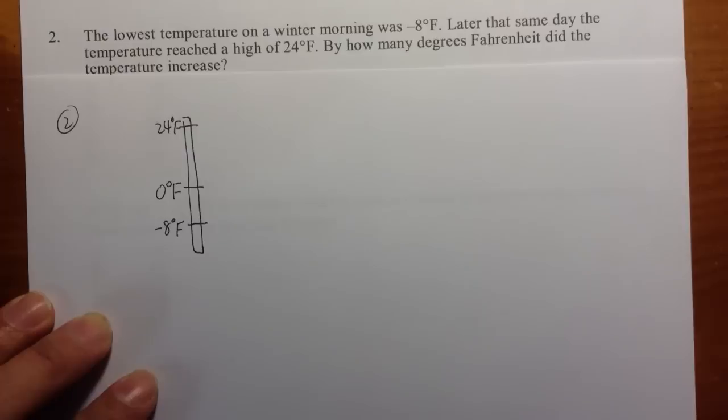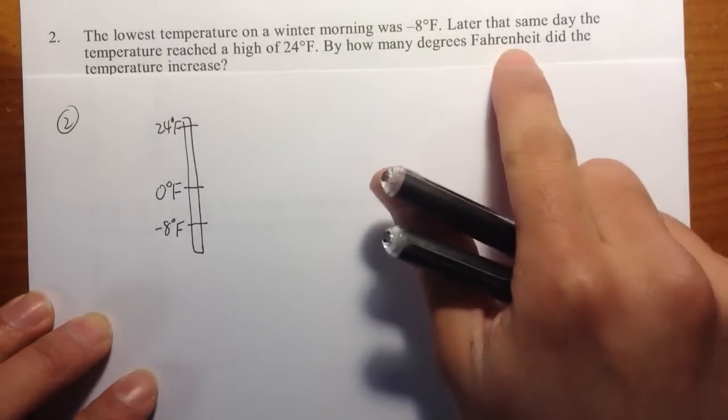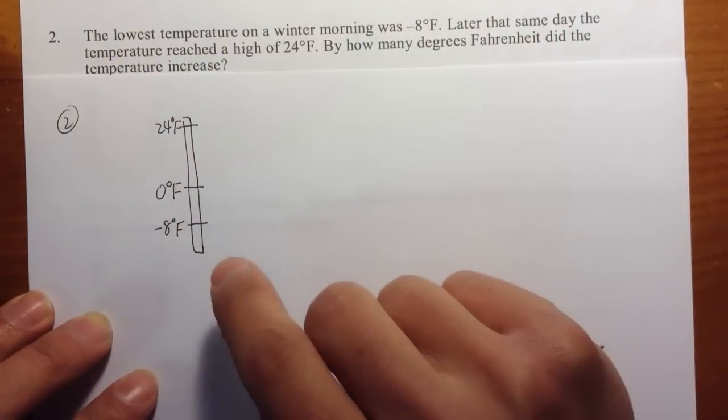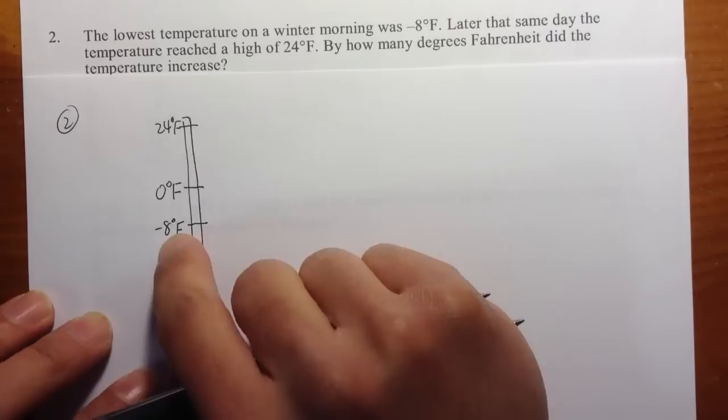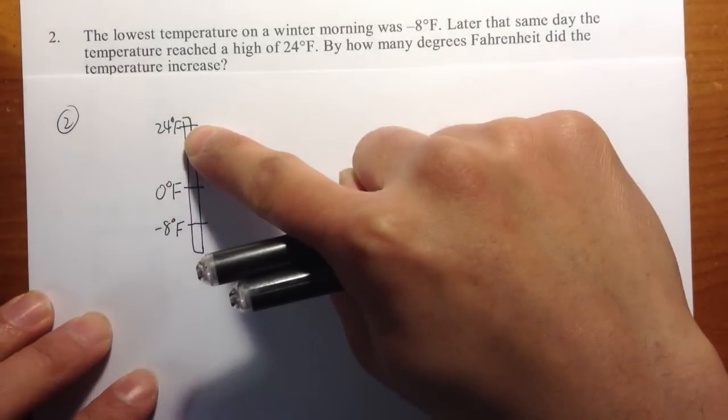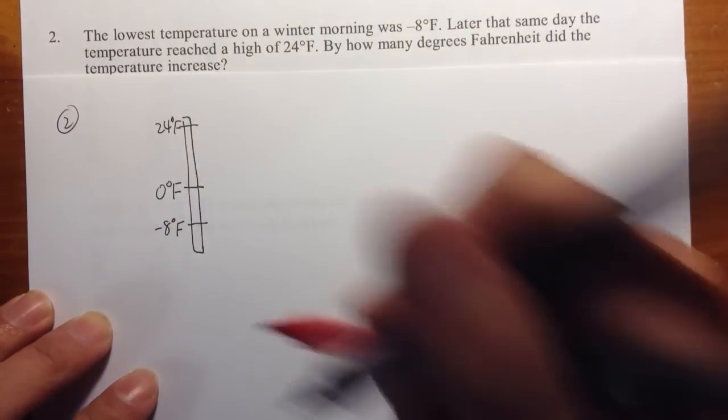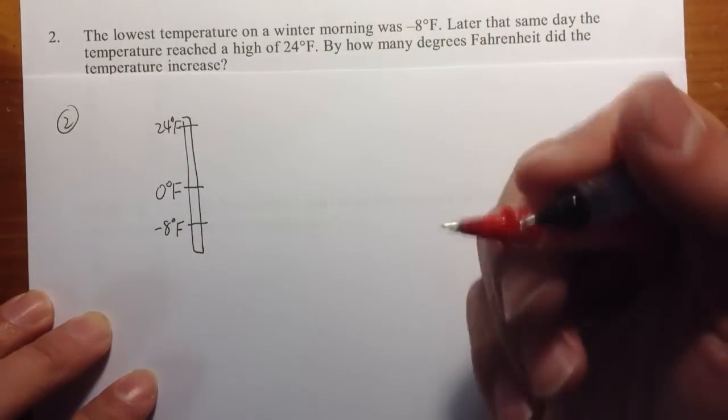And the question is, by how many degrees Fahrenheit did the temperature increase? So by how many degrees did we go from negative 8 all the way up to 24? So let's take a look at this picture and let's just calculate it.